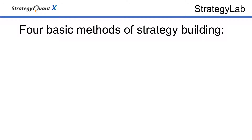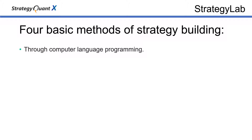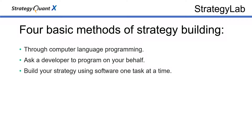Let's start at the beginning and take a look at four basic methods of strategy building. The first method is that you program your strategy by yourself — you completely code all rules using a computer language like Python. The next method is to hire a programmer to do it for you. Third is to use a software package to build, test, and optimize one strategy, one task at a time.